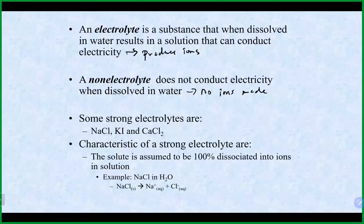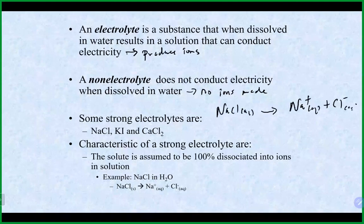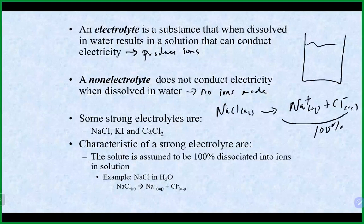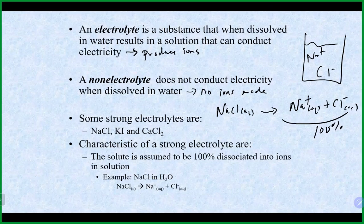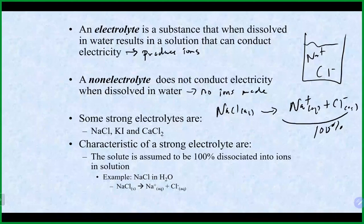In a sodium chloride solution, you would have 100% ions floating around — sodium ions and chloride ions — none of the sodium chloride units staying together. It's a one-way street to the products. KI and calcium chloride are also strong electrolytes. Strong acids and strong bases are strong electrolytes too, because they completely dissociate. In a light bulb conductivity experiment, the bulb would be very bright.